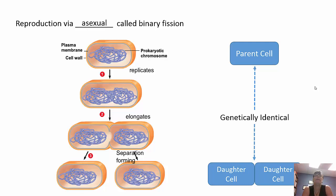Prokaryotes reproduce via asexual binary fission. The DNA replicates, the cell elongates, and the cell pinches in half, producing two daughter cells genetically identical to the parent. This is advantageous because they can produce many offspring quickly — just duplicating themselves. However, it's a disadvantage because if something wipes out the parent cell, it wipes out the clones too. A few may survive, which is how we get antibiotic-resistant bacteria.